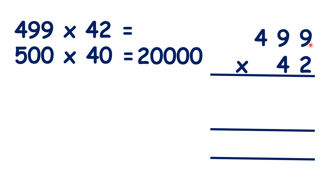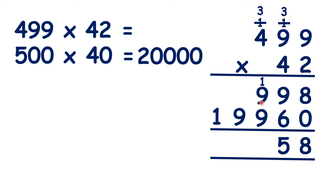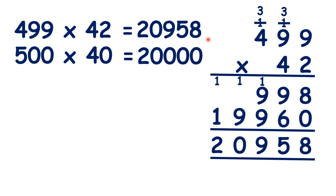So let's work it out. 9 times 2 is 18. 9 times 2 is 18, plus 1 is 19. And 4 times 2 is 8, plus 1 is 9. Now we cross out our working, write our zero, and 9 times 4 is 36. 9 times 4 is 36, plus 3 is 39. And 4 times 4 is 16, plus 3 is 19. So if we add up our totals: 8 plus 0 is 8, 9 plus 6 is 15, 1 plus 9 plus 9 is 19, 1 plus 9 is 10, and 1 plus 1 is 2. So our answer to the question is 20,958.